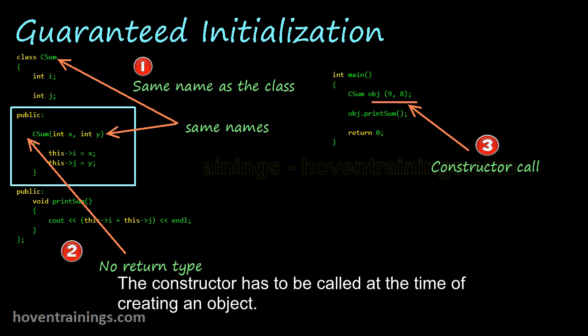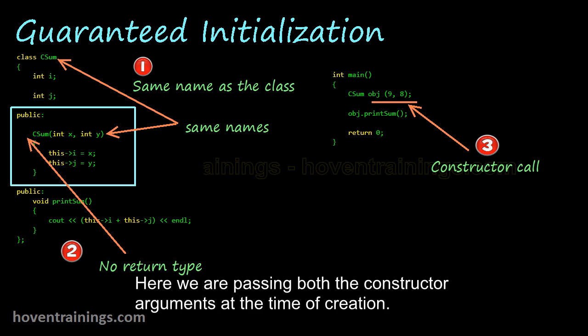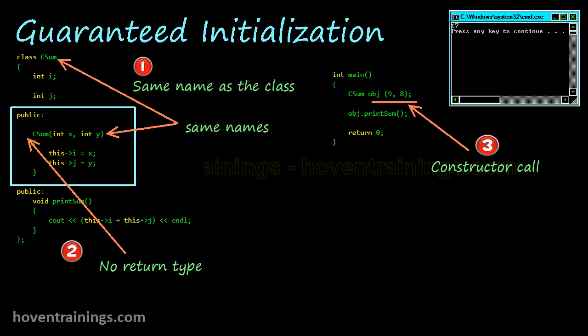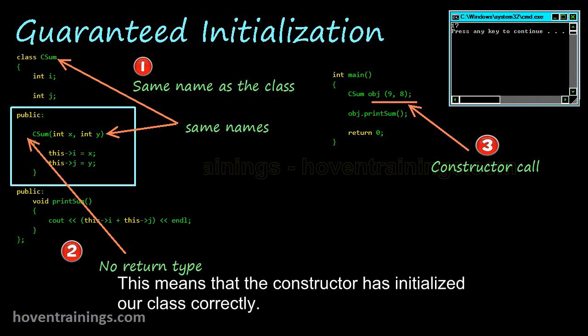The constructor has to be called at the time of creating an object. Here we are passing both the constructor arguments at the time of creation. You can run this code to see that the output is indeed 17. This means that the constructor has initialized our class correctly.